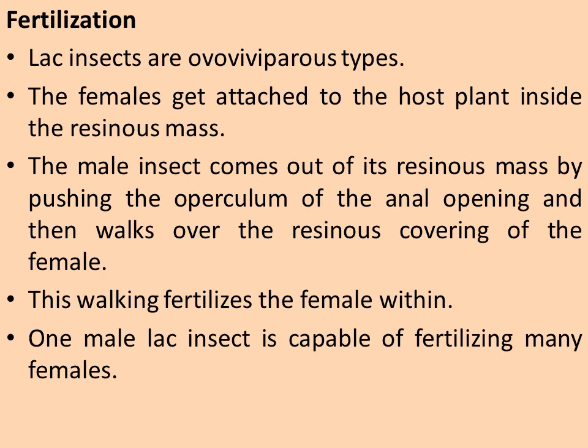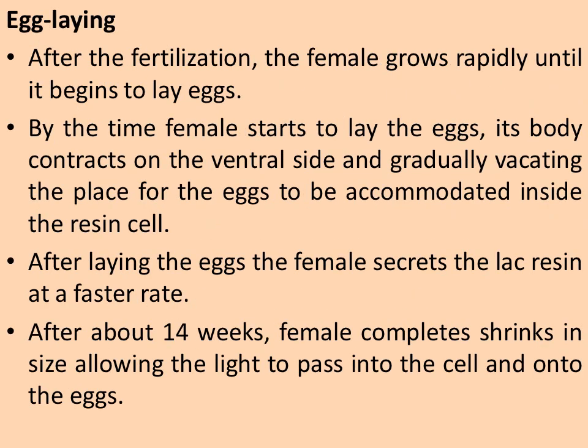Lac insects are oviparous. The females get attached to the host plant inside a resinous mass. The male insect comes out of its resinous mass by pushing the operculum of the anal opening and then walks over the resinous covering of the female. This is a very characteristic feature — the male comes out and fertilizes the female through this walking. One male lac insect is capable of fertilizing many females.